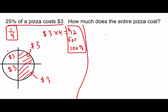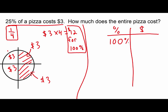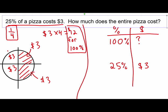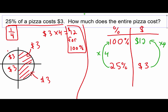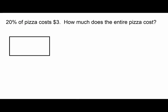Using the T-chart: write percent and dollars, put 100% at the top with a question mark, then write 25% = $3 below. Make an arrow showing times 4 — that's how we turn 25 into 100. Multiply $3 by 4 on the other side, and the question mark becomes $12.